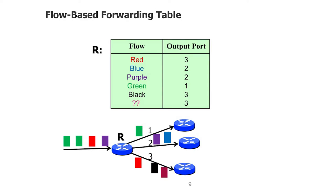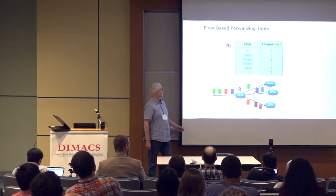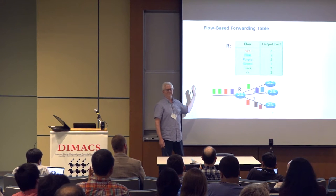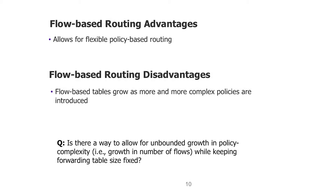You can do it with what I'm calling flow-based routing forwarding tables. Each packet in a particular flow has something in its header — think of it as a color — that tells you what flow it belongs to. The red ones go out port 3, the black ones go out port 3, and so on. With that, we can do flexible policy-based routing. But the disadvantage is that if you have these microflows, the tables get bigger and bigger again.